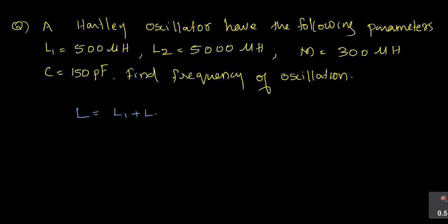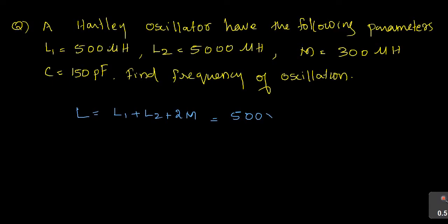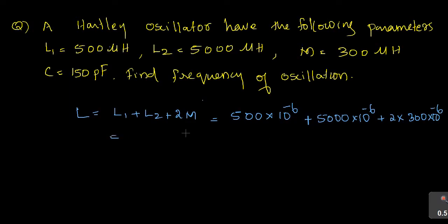We calculate L1 + L2 + 2M: L1 is 500×10⁻⁶, L2 is 5000×10⁻⁶, and 2M is 2×300×10⁻⁶ = 600×10⁻⁶. Adding these together gives 6100 μH.